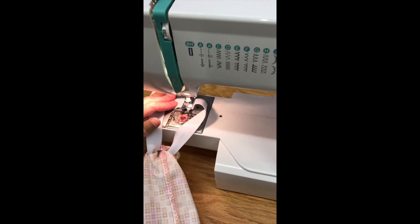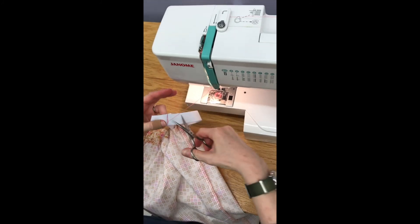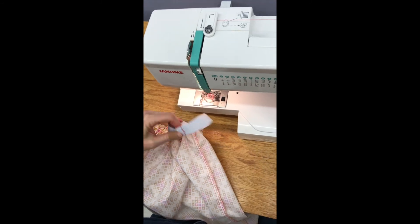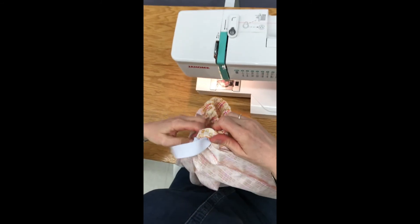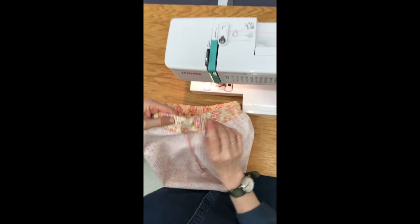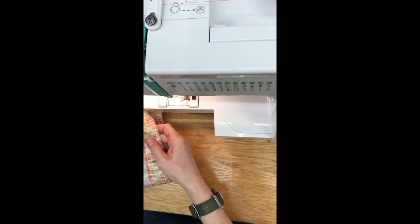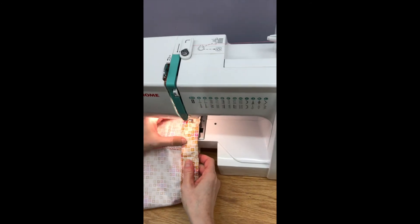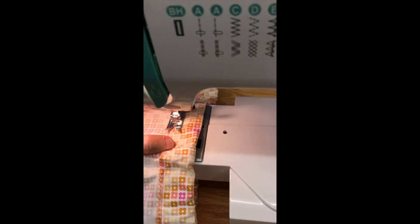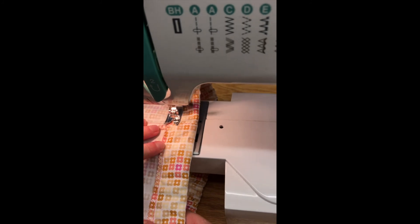Doesn't need to be pretty, it just needs to hold. Then you're going to pull the elastic into the casing and you just have to sew up this little opening that you left. So you're going to start where your last stitches ended and then fill in that gap with your stitches.